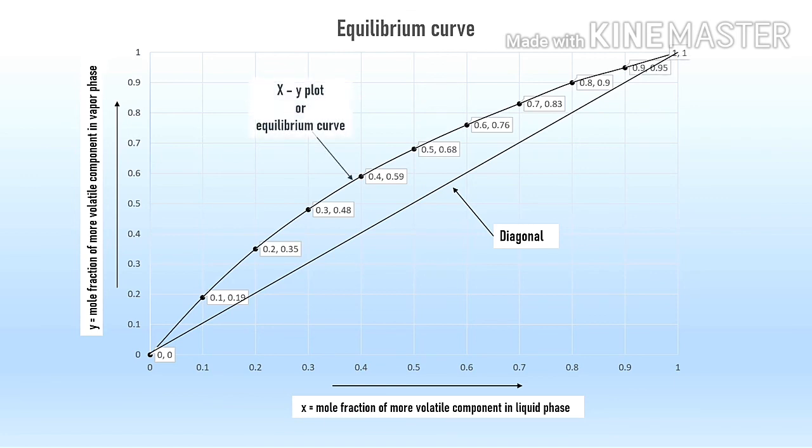As we see, the equilibrium curve lies on the upper side of the diagonal. This is because the mole fraction of more volatile component is more in the vapor phase than in the liquid phase.